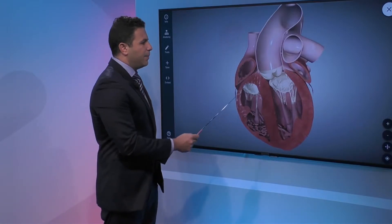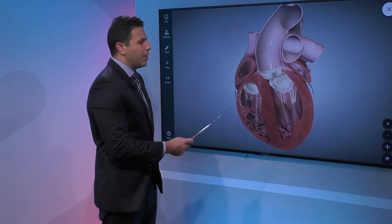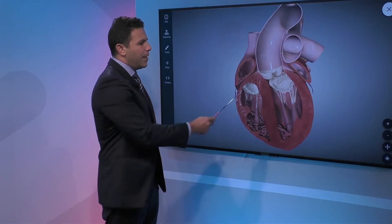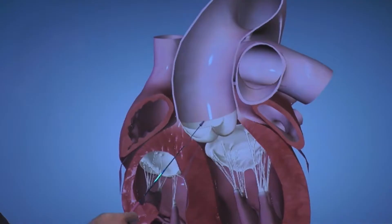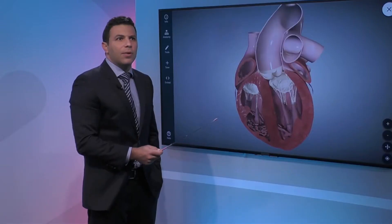Each one of these valves can be dysfunctional or damaged with time, and that's why it's really important to use imaging to figure out exactly what's going on. If you picture putting in a valve or any device into any one of these structures, you really need to know exactly where you're landing it and the structures around it — that's why imaging is so important to guide you through those procedures.